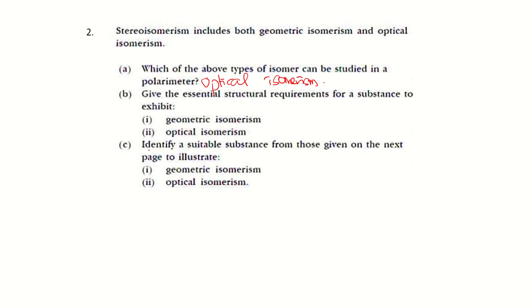Part B: give the structural requirements for a substance to exhibit geometrical isomerism. It must have a C=C double bond — or you may say it must have an alkene — to show geometrical isomers. For optical isomerism, you must have a chiral center, or chiral carbon.